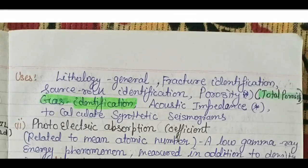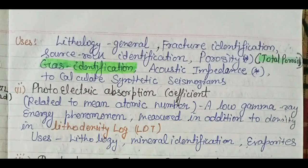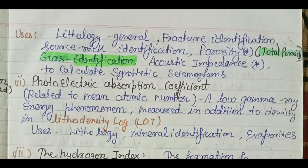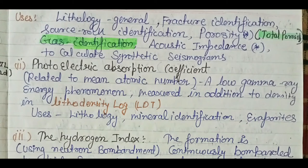The uses of the density log include lithology, channel and fracture identification, source rock identification, and total porosity — which is the most important measurement. Gas identification, acoustic impedance, and the calculation of synthetic seismograms are also applications, since acoustic impedance is the product of density and velocity. There is also photoelectric absorption coefficient measurement, related to the mean atomic number — a low gamma ray energy phenomenon — giving us the litho-density log.